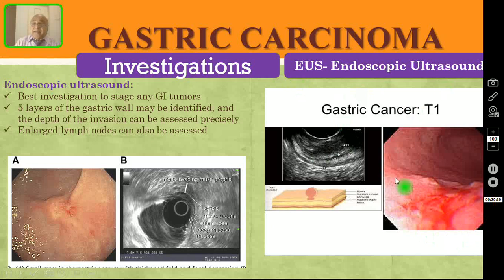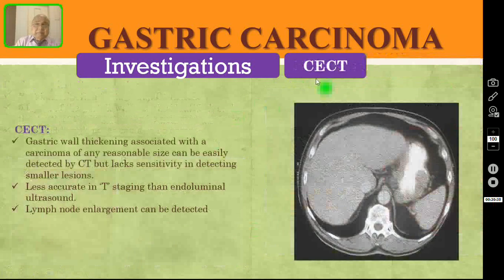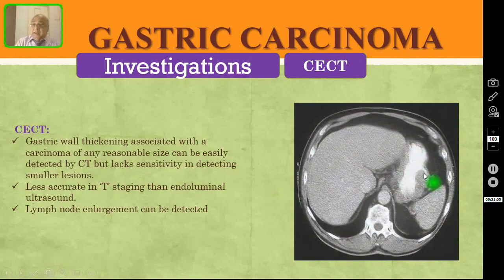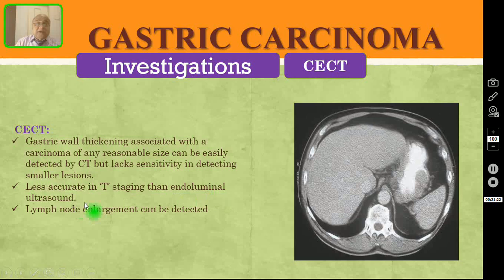Another important investigation is contrast-enhanced CT scan (CECT). Gastric wall thickening associated with carcinoma of any reasonable size can be easily detected, but CECT lacks sensitivity for smaller lesions. It is less accurate than endoluminal ultrasound for T-staging, but lymph node enlargement can also be detected by CECT.